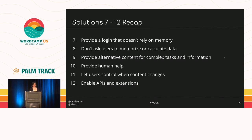Let's recap solutions 7 through 12: provide a login that doesn't rely on memory; don't ask users to memorize or calculate data; provide alternative content for complex tasks and information; provide human help; let users control when content changes; and enable APIs and extensions.